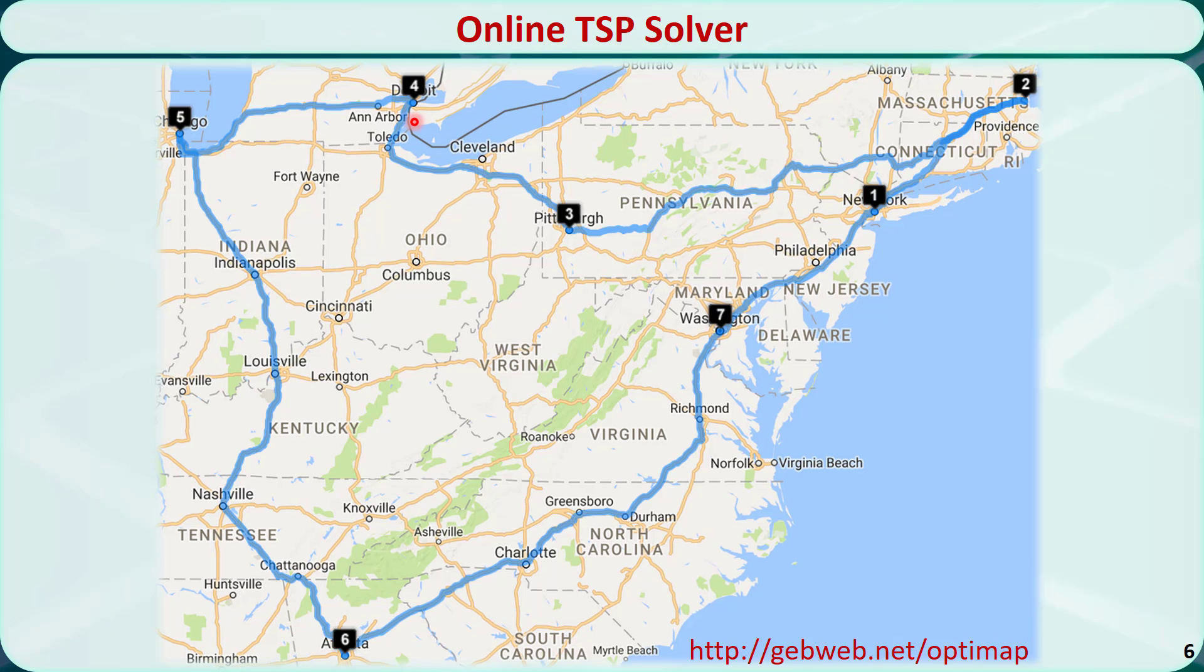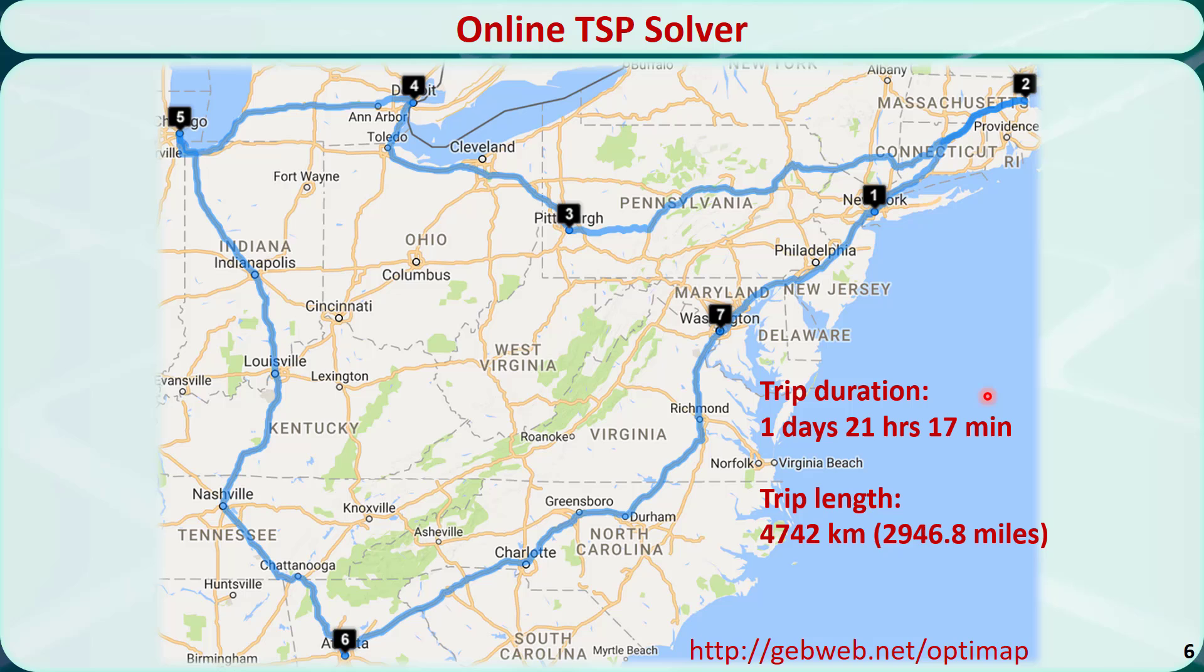Using this online tool, I find that the best solution is this: New York City, Boston, Pittsburgh, Detroit, Chicago, Atlanta, Washington DC, and back to New York City. The duration is 1 day 21 hours and 70 minutes. The total length is 2,946.8 miles. Of course, I can also go in the reverse direction because this is approximately a symmetric traveling salesman problem.